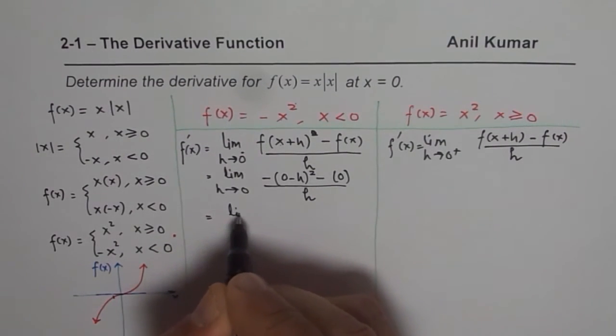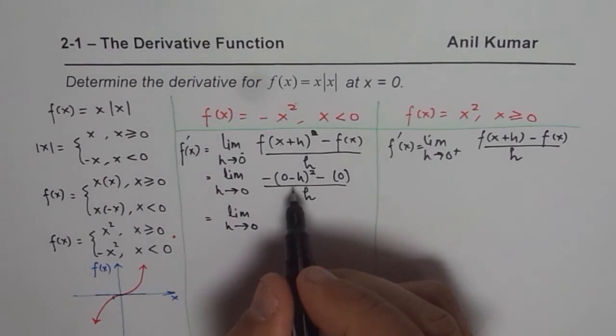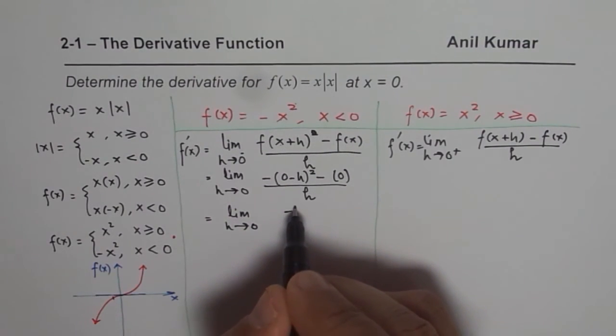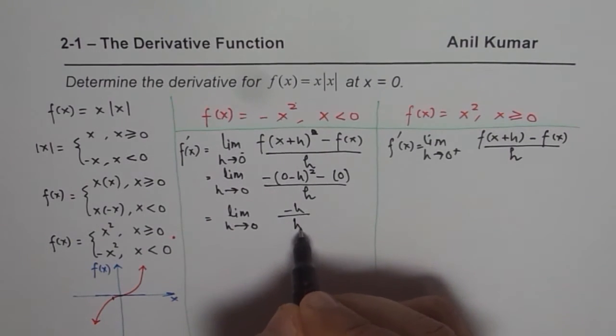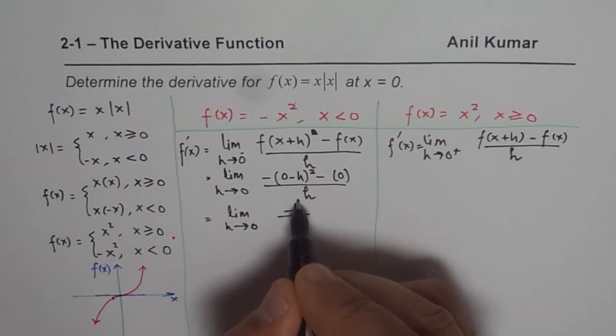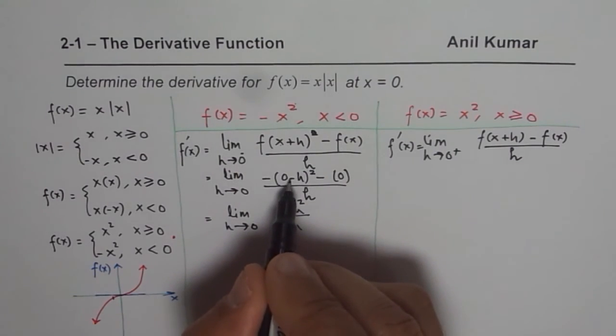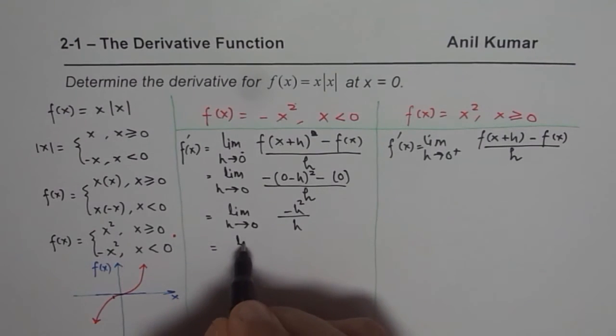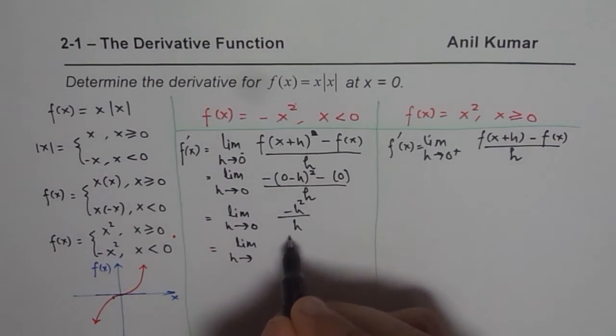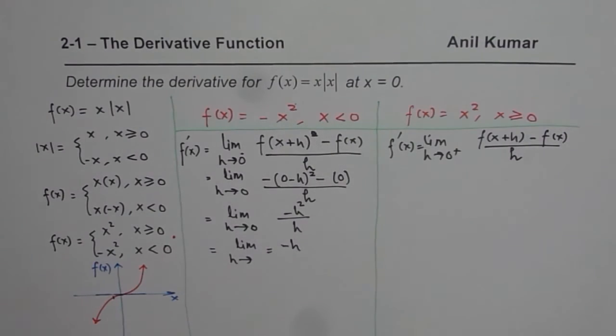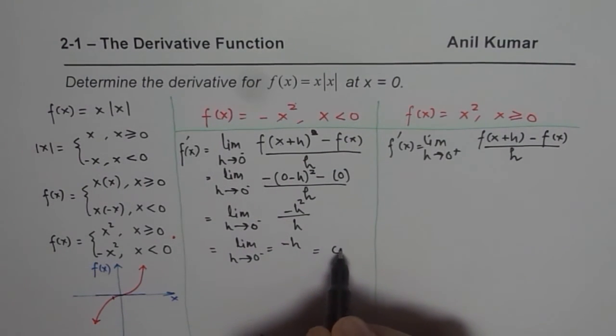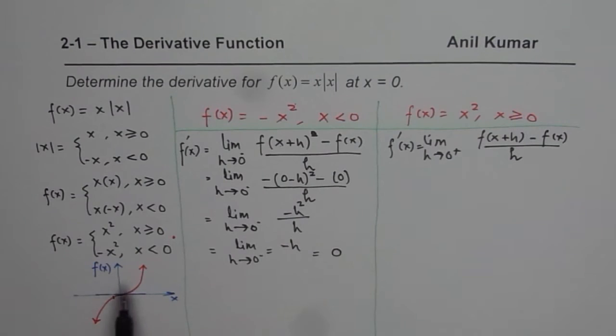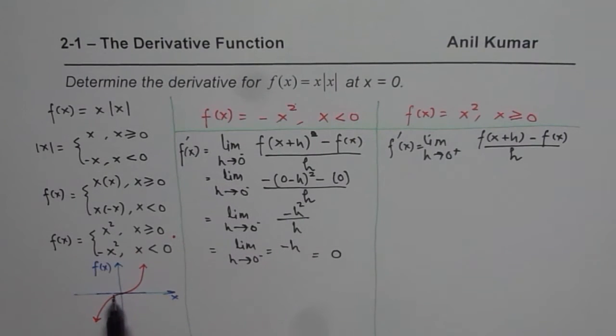Divided by h. So that gives us limit h approaches 0. And what do we get here? So when I open this bracket, I get minus h over... minus h², this minus. So this becomes square, minus h² over h, which is limit h approaches 0, one of these h cancel, so I get minus h. So when I am approaching 0 from the negative side, if I substitute 0 here, what do I get? I get 0 as my limit. So as I'm approaching 0 from the left side, the limit of the function, the rate of change, I should say, the derivative of the function is 0.